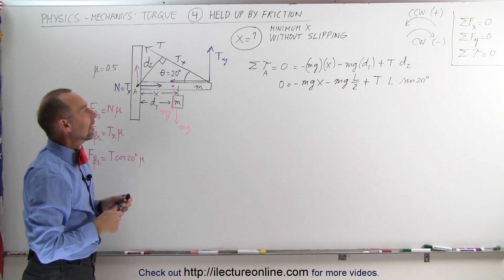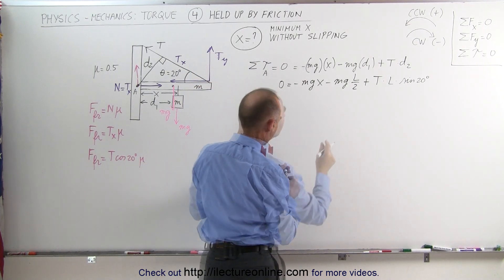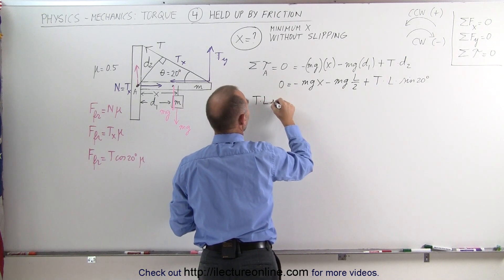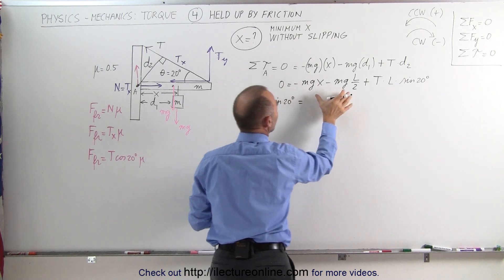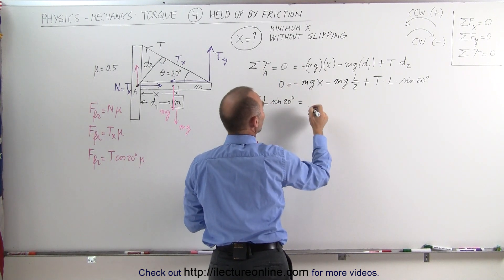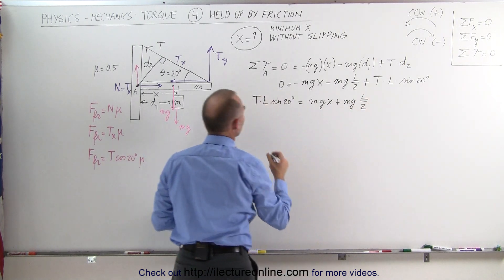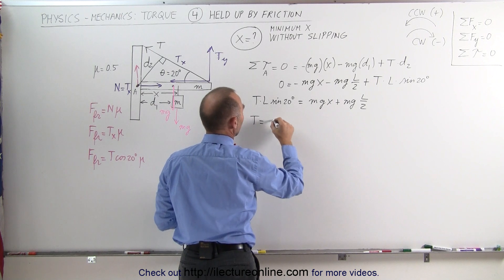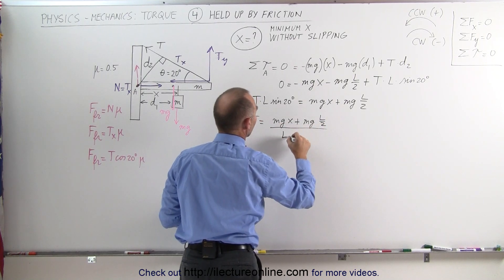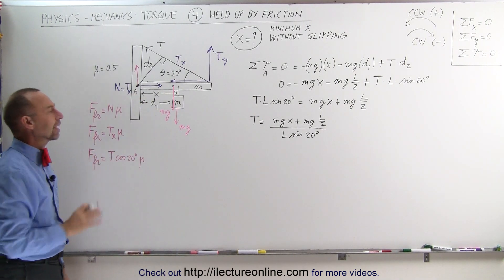This gives us the tension. Rearranging the torque equation — T times L times sine(20°) equals mg·x plus mg·(L/2) — we solve for T: T equals mg times (x plus L/2) divided by L times sine(20 degrees). We leave it in that form for now.